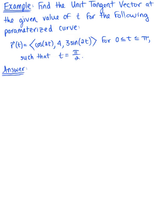Find the unit tangent vector at the given value of t for the following parameterized curve. This vector-valued function, vector r of t, is defined as cosine of 2t, 4, 3 sine of 2t for t greater than or equal to 0, less than or equal to π.